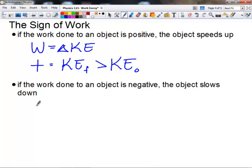If it's negative, the object will slow down. We know that negative, then, lets us know that KE final must be less than KE initial. So if we have a positive work done, that means that our object's final kinetic energy is greater than its initial kinetic energy. And if we have negative work done, that means that the object's final kinetic energy is less than the object's initial kinetic energy.